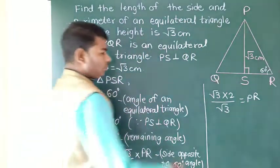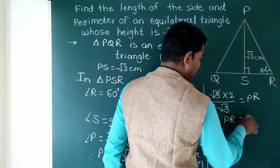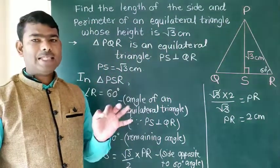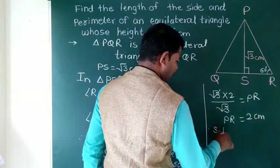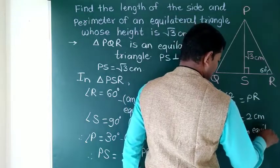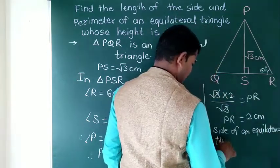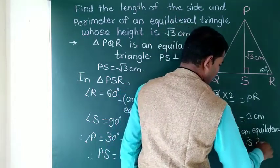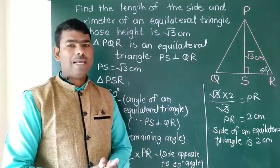Substituting root 3, we find PR equals 2 cm. Therefore, the side of the equilateral triangle is 2 cm.